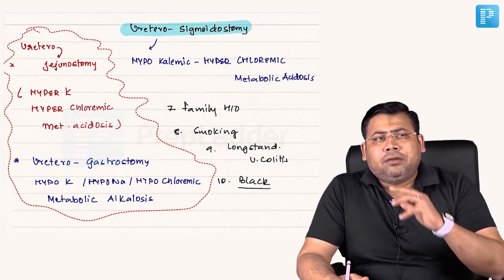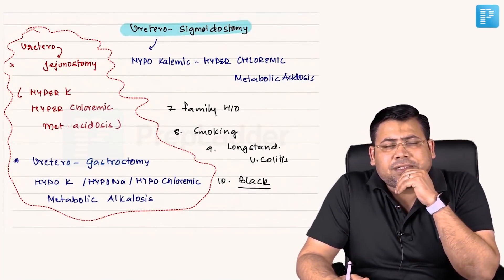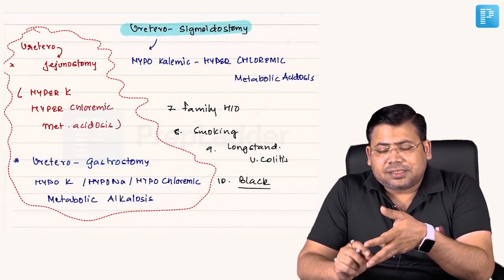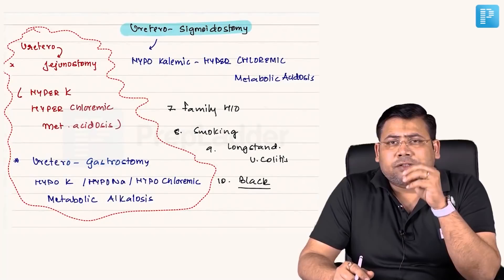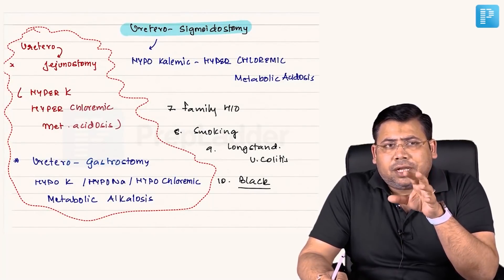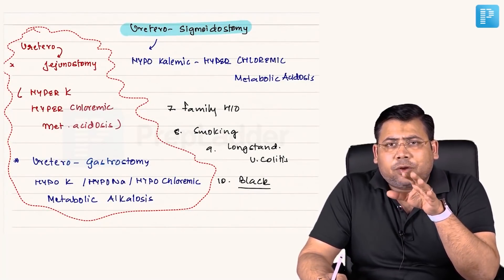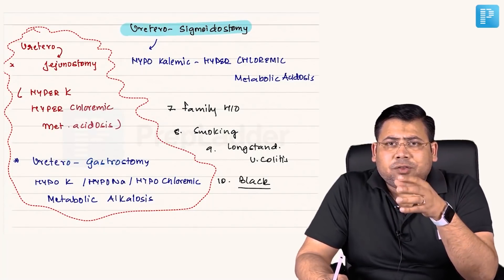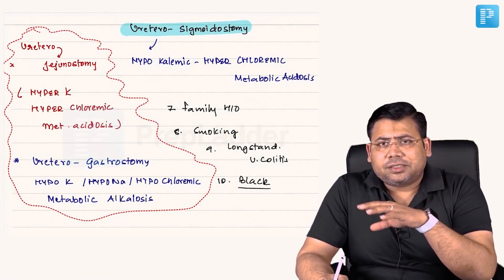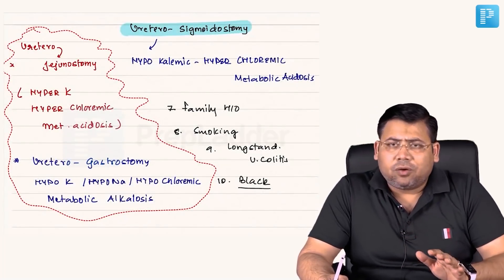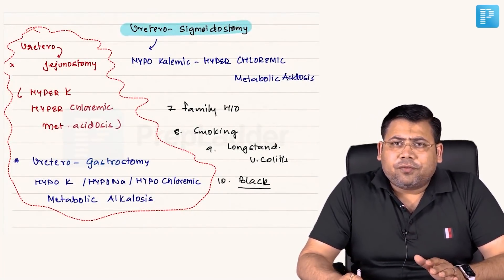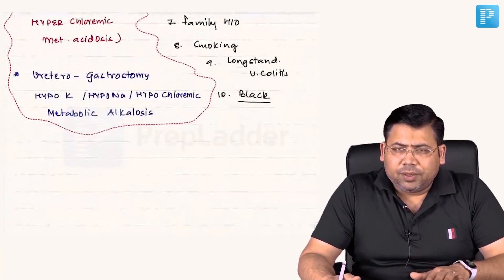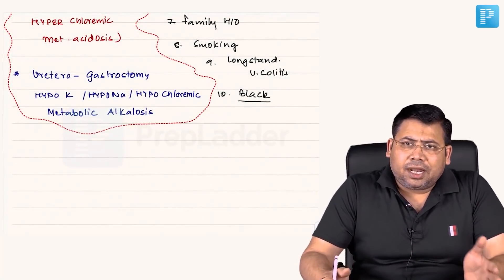There have been theories that cholecystectomy increases the risk of malignancy due to damaged enterohepatic circulation, causing bile loss — but this is not proven with strong evidence. For prevention, it is vitamin C, vitamin E, and aspirin.